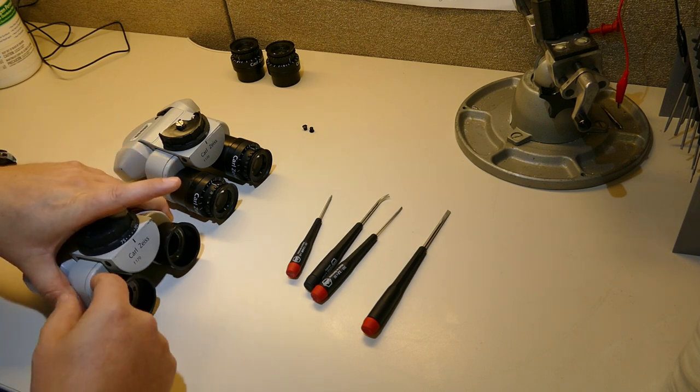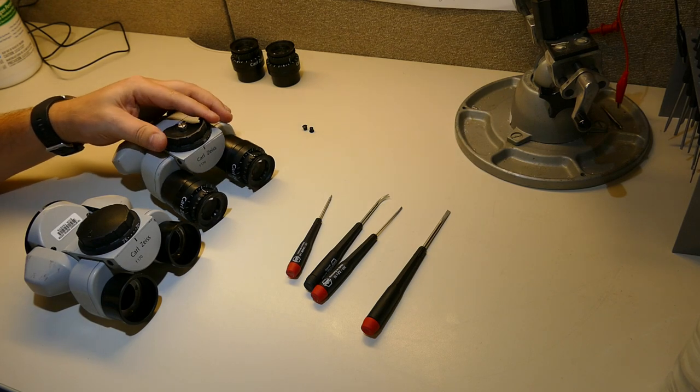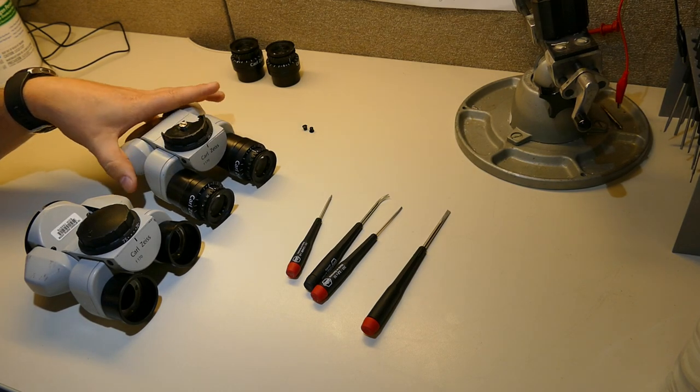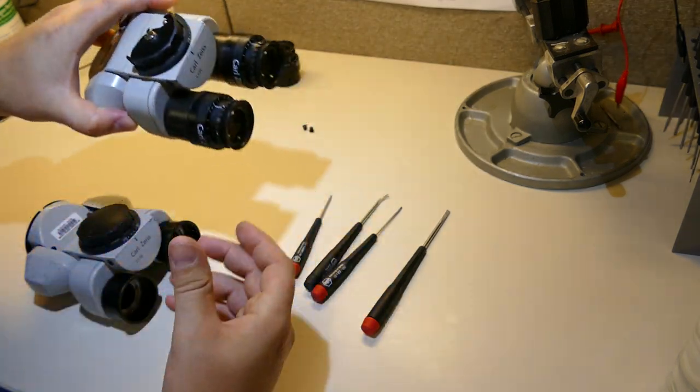You would go in from this side and hopefully tighten it back down. But this one here has a broken IPD adjustment cap. You can see how it broke right there. That's very common.